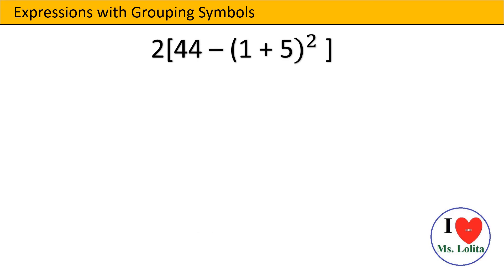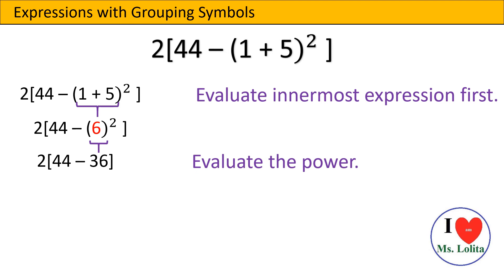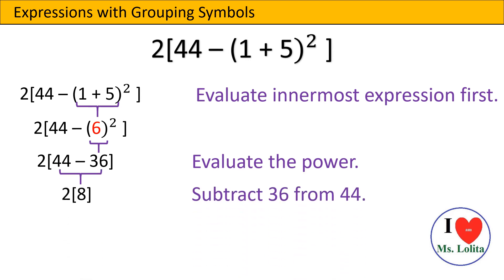What if we have two grouping symbols? Let us work on this equation: 2 bracket 44 minus open parenthesis 1 plus 5 close parenthesis squared close bracket. We evaluate the innermost expression first — 1 plus 5 gives us 6. Next, we evaluate the power: 6 squared gives us 36. Then we work on the numbers inside the bracket: subtract 36 from 44, giving us 8. The last step is multiplication: 2 times 8 gives us 16. Therefore, 2[44 − (1+5)²] = 16.